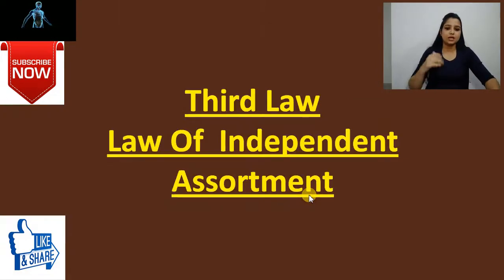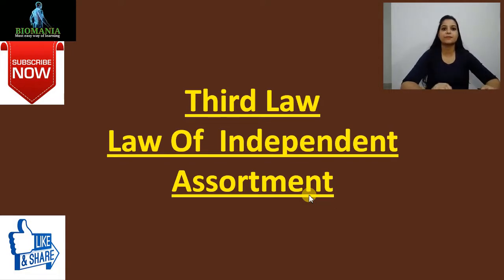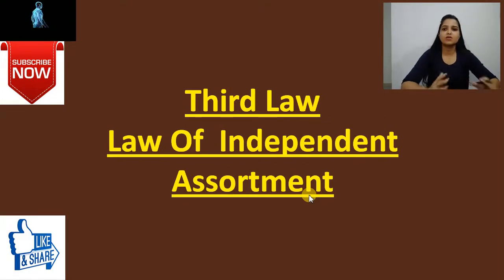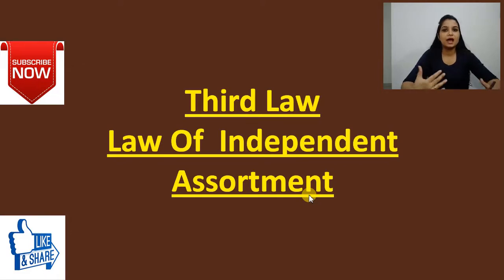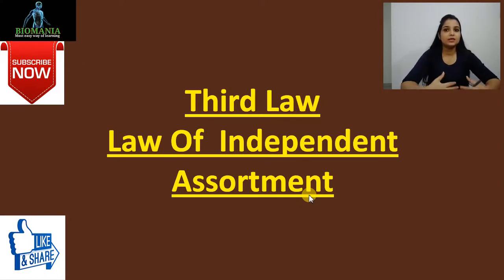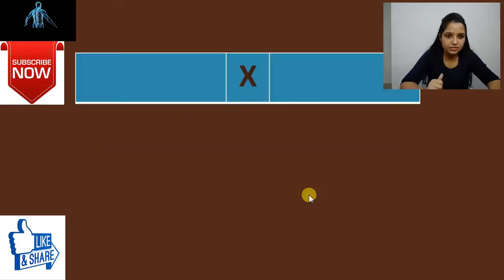Before understanding the law of independent assortment, we have to learn about the dihybrid cross, because we cannot study the law of independent assortment without knowing it. In the case of the law of dominance and law of segregation, those can be learned with monohybrid or dihybrid both. So first we will see what the dihybrid cross is, and after that we will see how it is related to independent assortment.